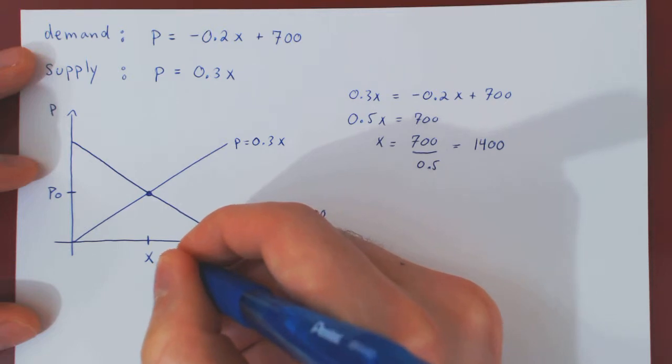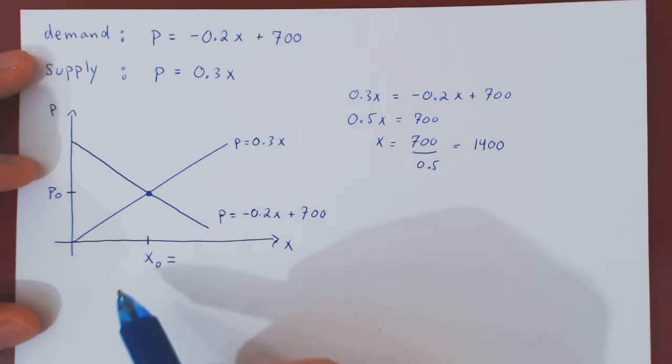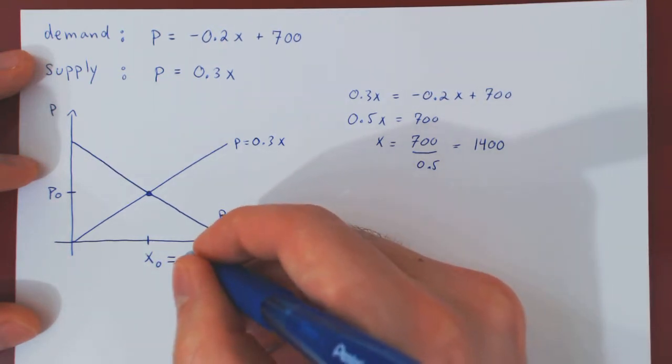So, the number of units sold by the supplier and purchased by the consumers is equal to 1400 at the equilibrium point.